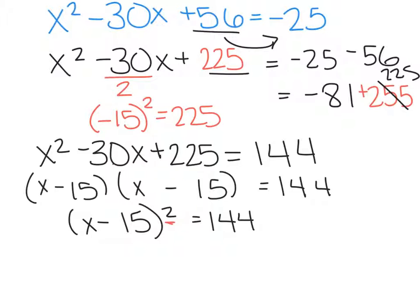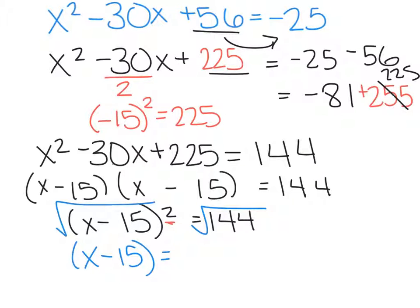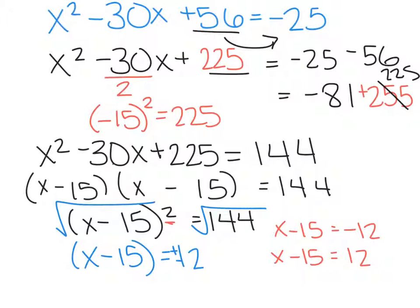x minus 15 squared equals 144. To get rid of this square, all I need to do is square root both sides of the equation, and that would leave me with x minus 15 equals the square root of 144, which is 12. And you have to put the plus or minus, because then you would solve it by doing x minus 15 equals negative 12 and x minus 15 equals positive 12. So when you solve for x, you would find that x equals 3 and x equals 27.